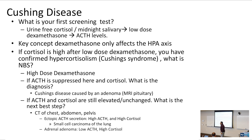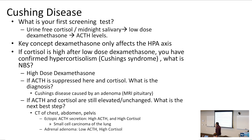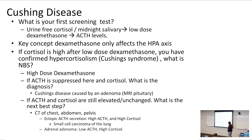What about an adrenal adenoma? If the adrenal adenoma keeps pouring out cortisol, that cortisol is going to feed back — you're going to have low ACTH levels and high cortisol levels. Adrenal adenomas are going to cause Cushing's syndrome as well.